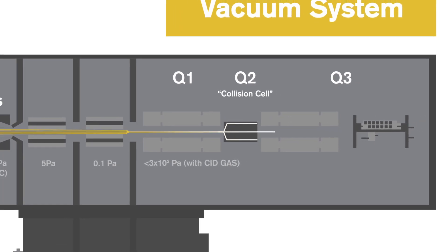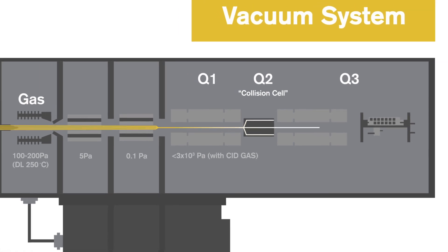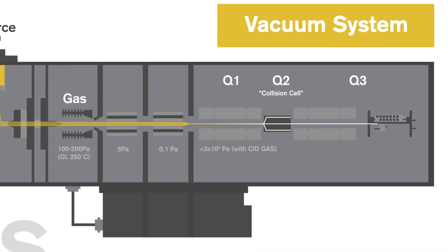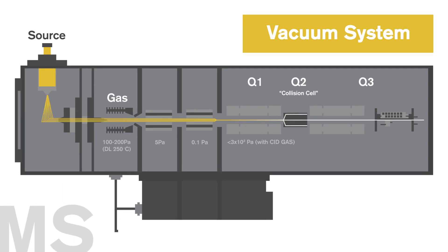The daughter ions are filtered in Q3 and passed to the detector. Each molecule has a unique fragmentation pattern. The mass of the parent and daughter molecules are measured and recorded. The mass of a specific parent molecule and the mass of a daughter molecule are specific, predetermined numbers.